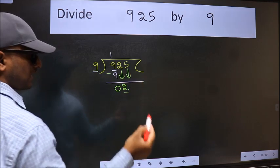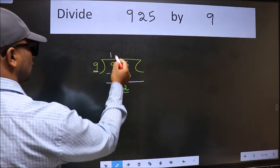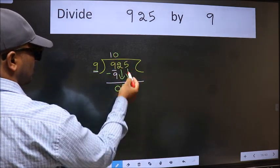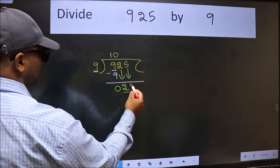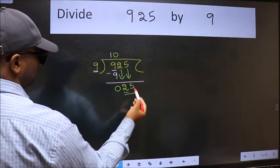And the rule to bring down second number is we should put 0 here. Then only we can bring this number down. Now 25.